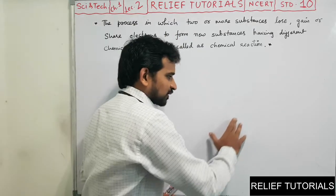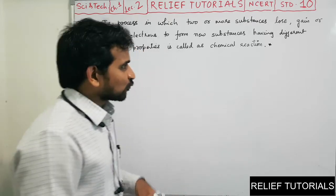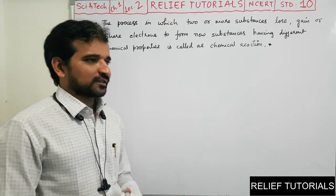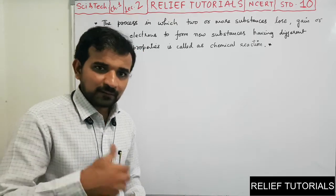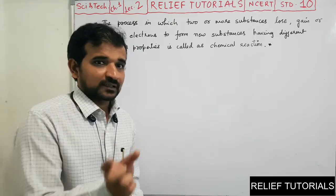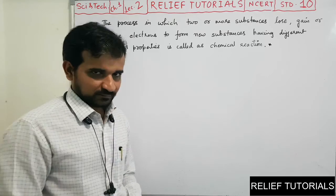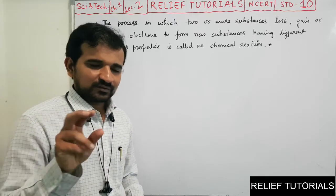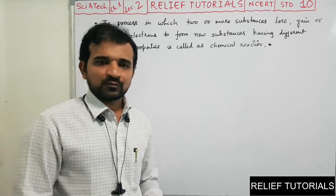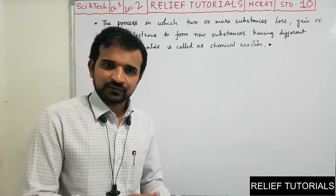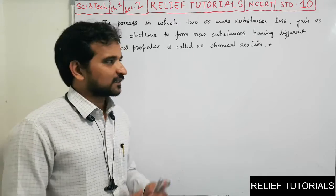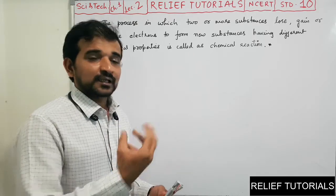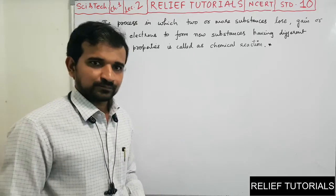Now, the topic in our chapter is how to represent a chemical reaction in the form of a chemical equation. To describe the reaction we have some symbolic forms by which we can represent the reaction in a simpler method — that is, equation form.